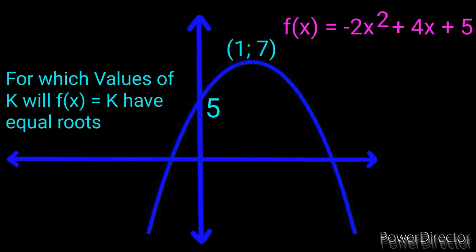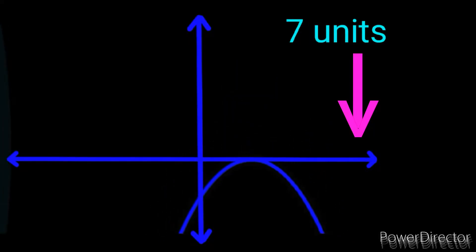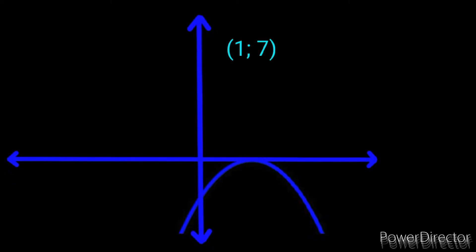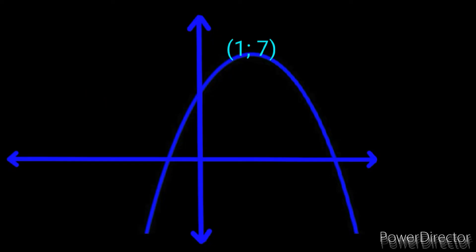We're given that the y-intercept is positive 5 and the turning point is (1, 7). Since the question asks about equal roots, our focus must be on the y-value of the turning point. Notice that if I shift this graph 7 units downwards, it now has one x-intercept, meaning it has equal roots. So the shift must be 7 units downwards — our shift is negative 7.